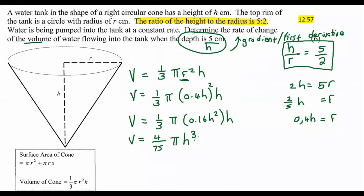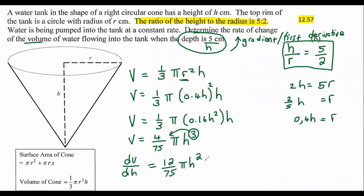Now I can take the first derivative because that is the rate. Technically I should write it as DV over DH. If you write it as V with a prime, it's okay. Taking the derivative, we bring the three down and multiply to the front, so that becomes 12 over 75 pi H squared. Now if they had said determine the value of H so that the volume is a maximum, you would make this value zero — that's what we normally do for optimization. But that's not what they're asking. They want the rate when the height is five, so I'm going to plug in five.